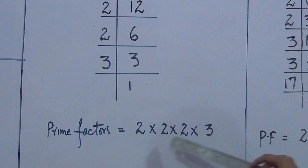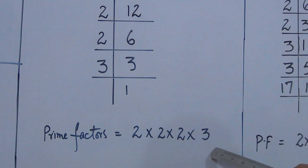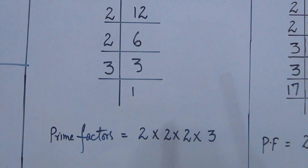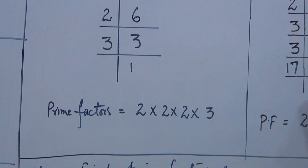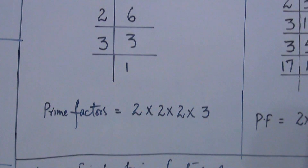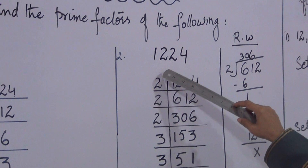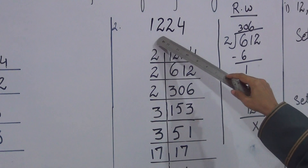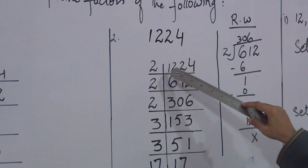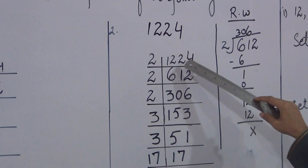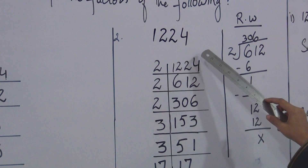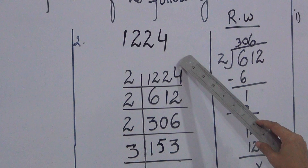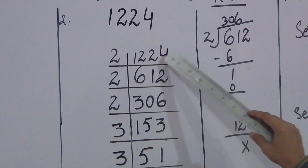Now write down all the prime numbers: 2 × 2 × 2 × 3. If we multiply these together, we get back the original number. The second question I have solved for you is 1224.